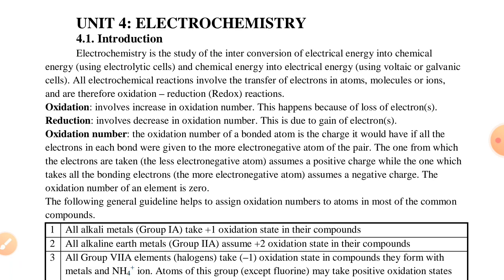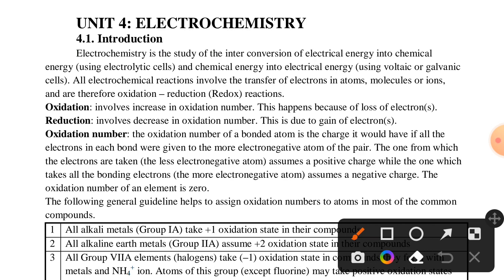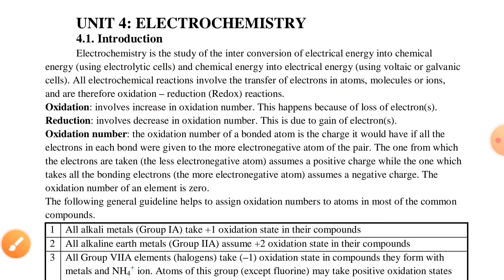All electrochemical reactions involve the transfer of electrons in atoms, molecules, or ions. Transfer of electrons involves atomic molecules and ions, and therefore oxidation, reduction, or redox reaction is the same as an electrochemical reaction.